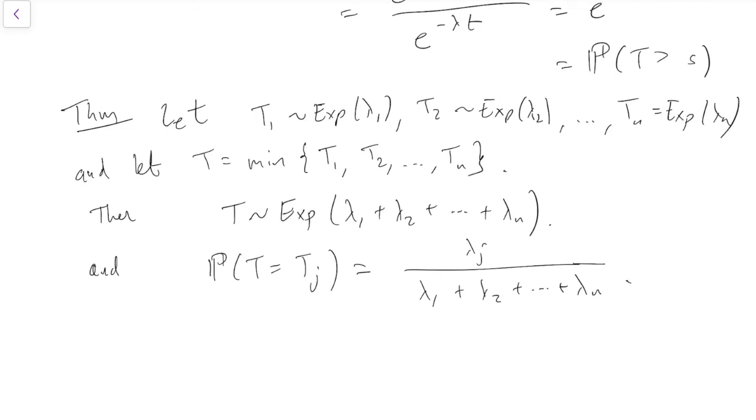So now we've learned some useful facts about the exponential distribution. Next thing we're going to go on to is how that's related to the Poisson process.